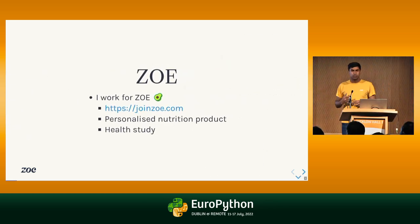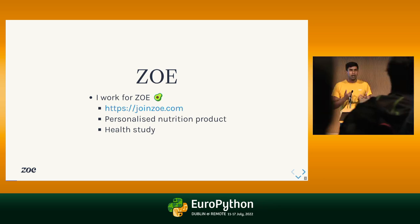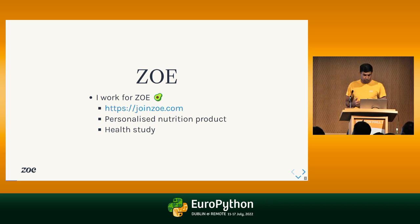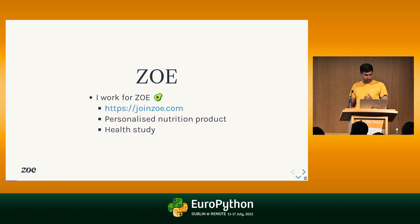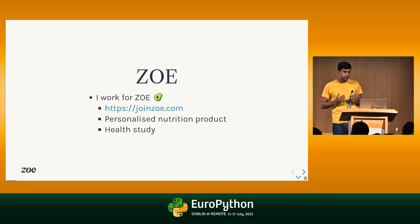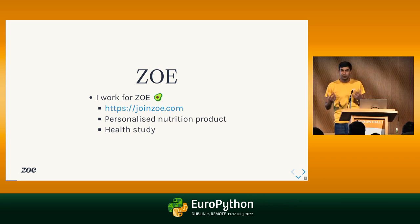I also work for a company called Zoe, who have very graciously sent me over here. Zoe is a startup in the healthcare space, and we have what you might call two products: a personalized nutrition product, which is all about understanding how your body responds to food, and a health study using the power of community science to tackle global health issues. This is what we pivoted from — the COVID symptom study, which some of you may have heard of, especially those living in the UK.